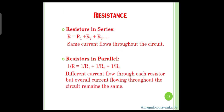Next topic is resistivity. Resistivity is the characteristic property of a material by which it resists the amount of current through it. On the basis of resistivity, different materials can be categorized into conductors — those materials which have very low resistivity and allow current to pass through them easily. Example: copper.